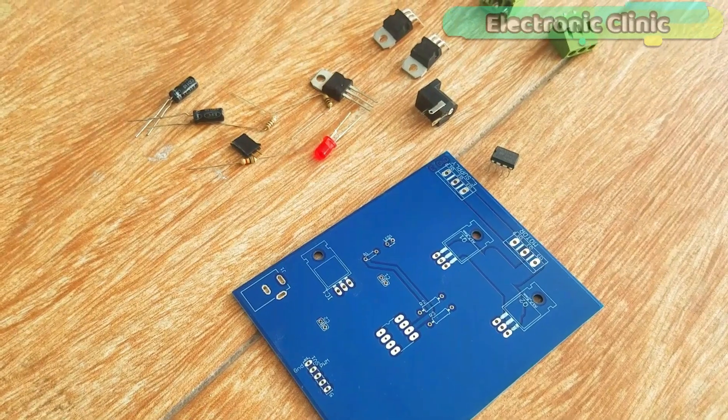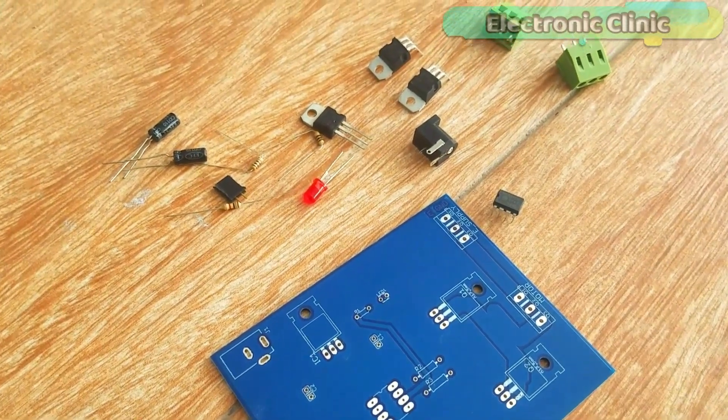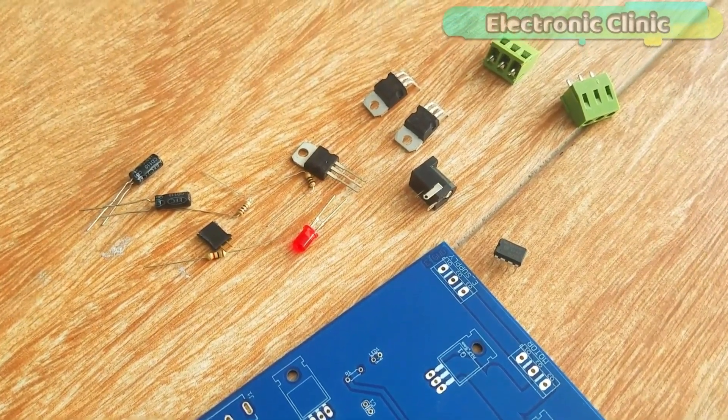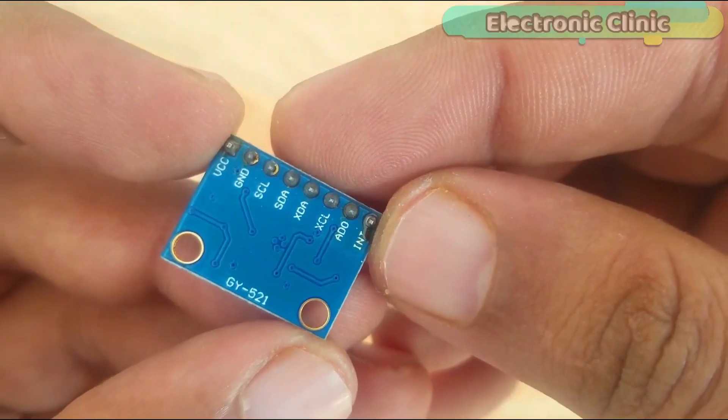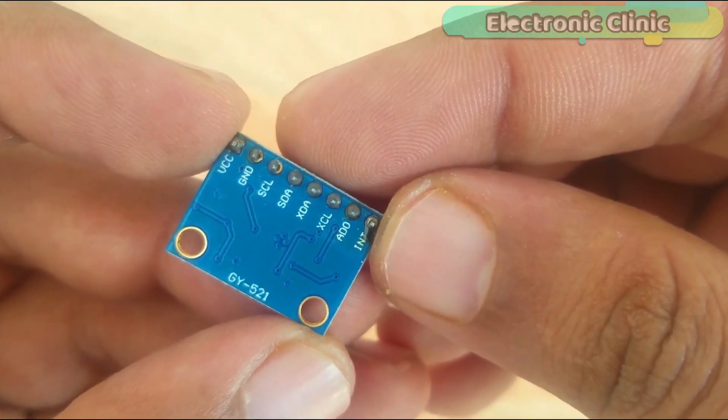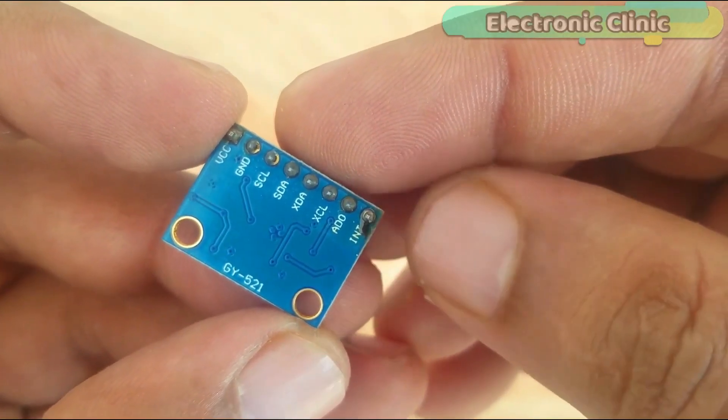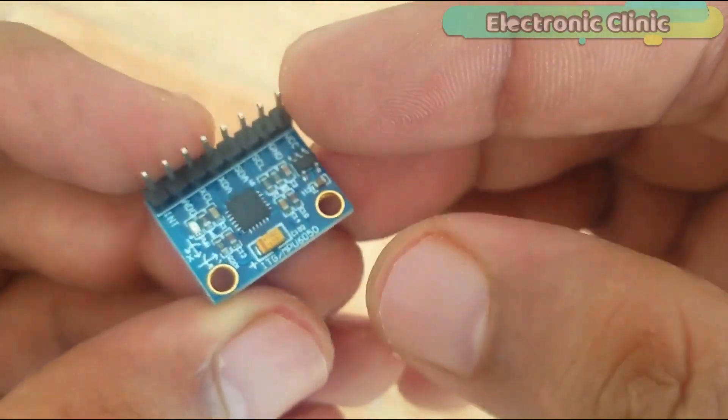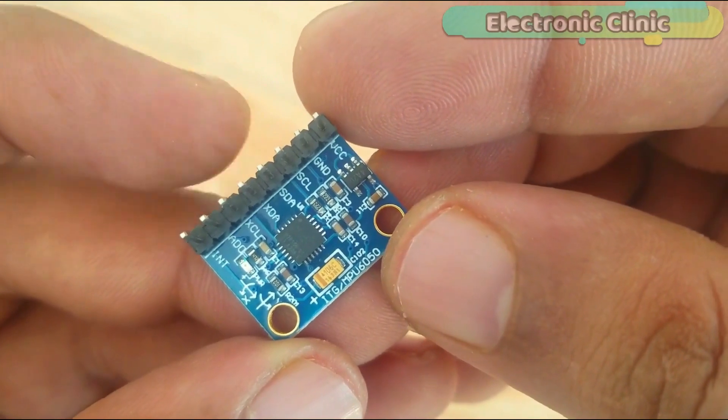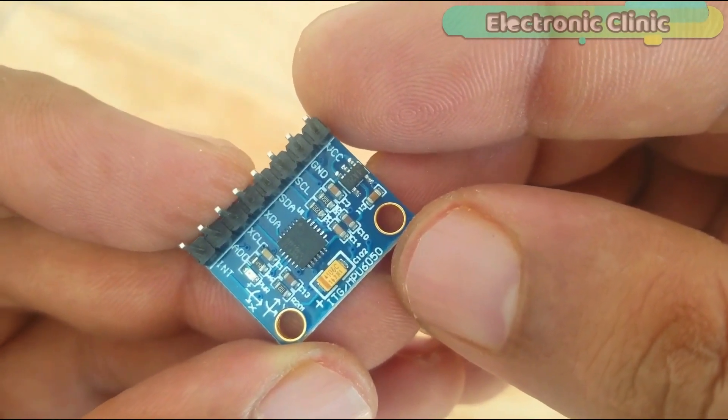The components and tools used in this project can be purchased from Amazon. The component purchase links are given in the description. This is the GY-521 MPU6050 6DOF 3-axis gyroscope and accelerometer module.